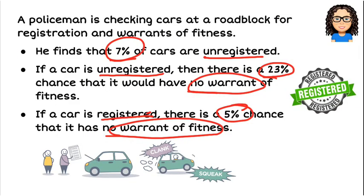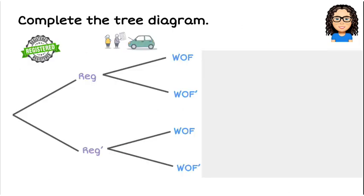We're told 7% of cars are unregistered, so that goes on as 0.07. Since 7% are unregistered, the percentage of registered cars is the mutually exclusive opposite — that's 93%, or 0.93.